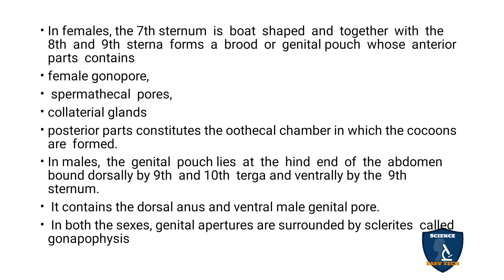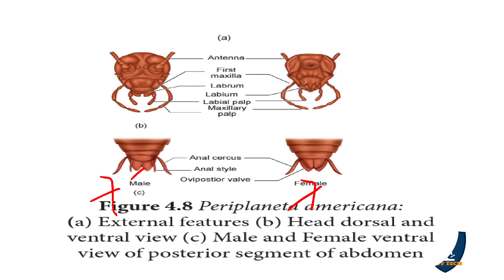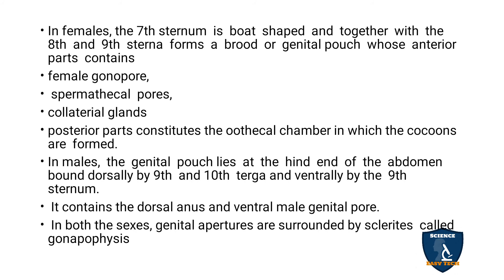In the male, the genital pouch lies at the hind end of the abdomen, bounded dorsally by the ninth and tenth tergum and ventrally by the ninth sternum. It contains the dorsal anus and the ventral genital pore. In both sexes, the genital apertures are surrounded by sclerites called gonopophyses.